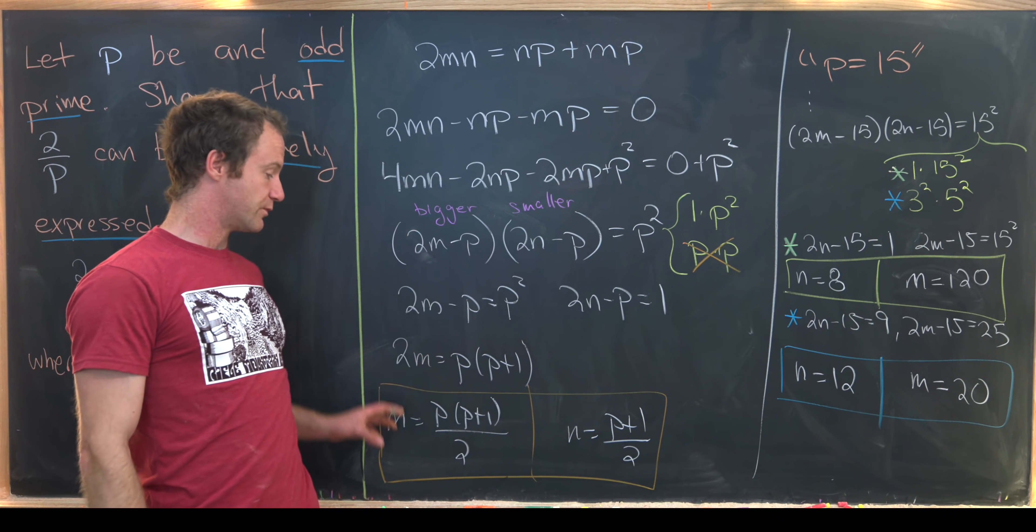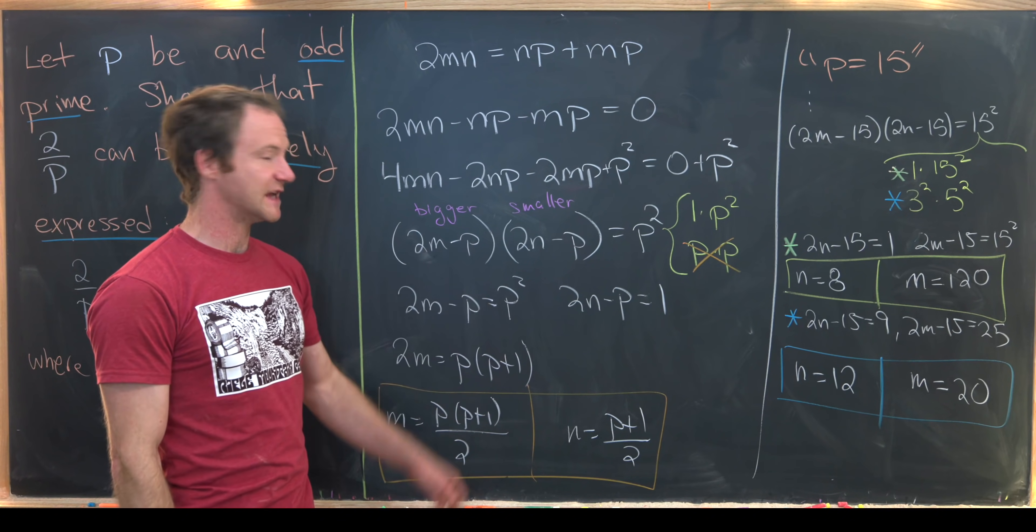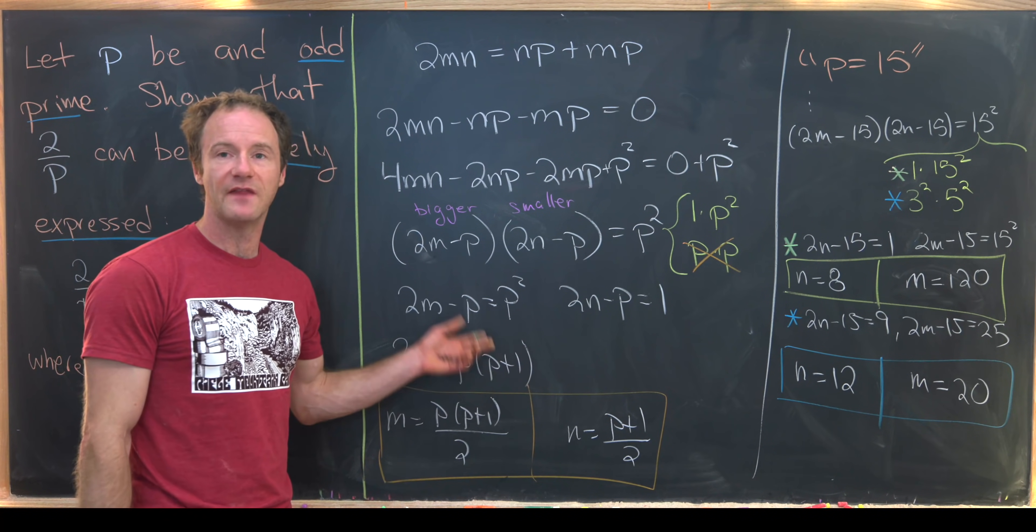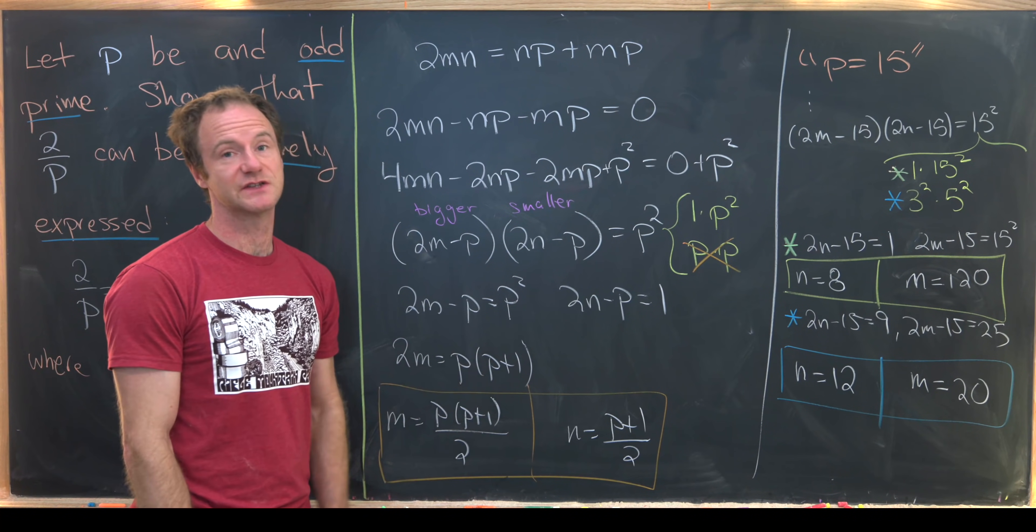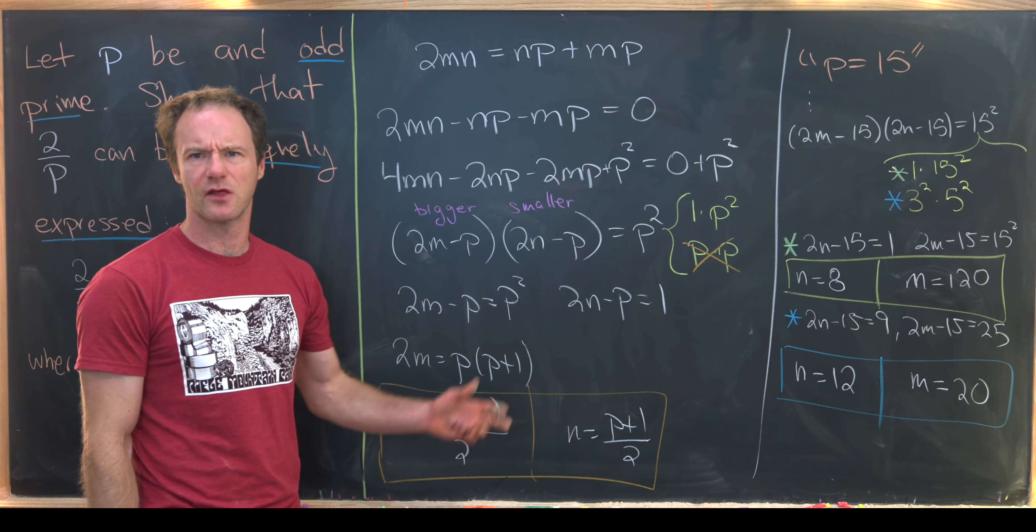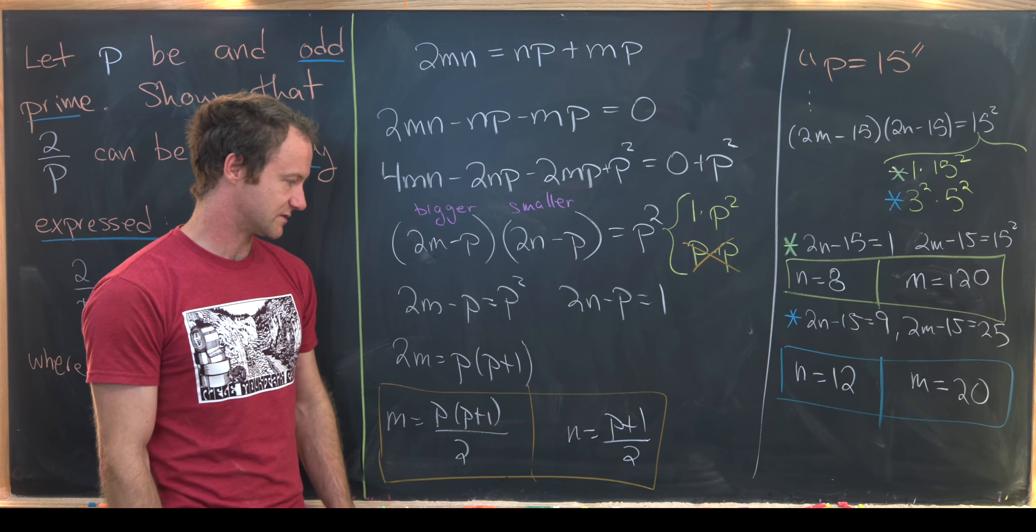So we proved uniqueness for the case when we have an odd prime. And then we gave a nice example where this is not possible in the case where we have an odd composite. In other words the uniqueness is not possible.